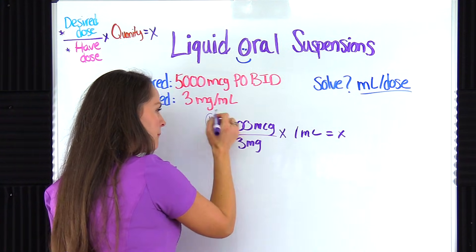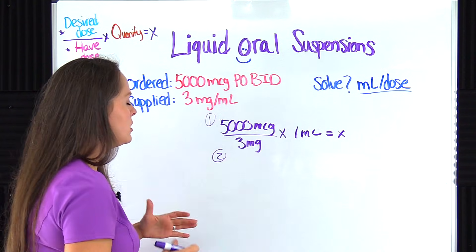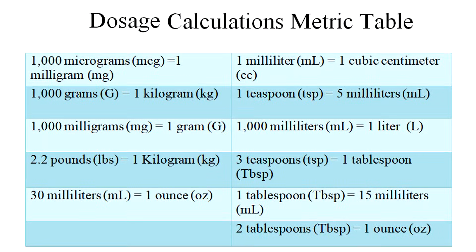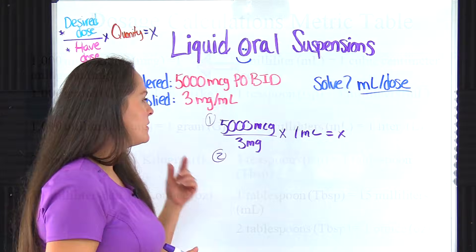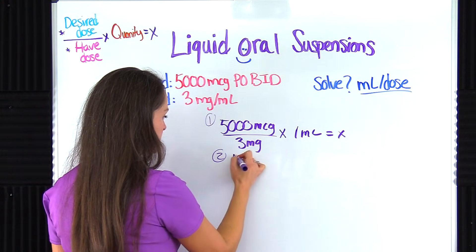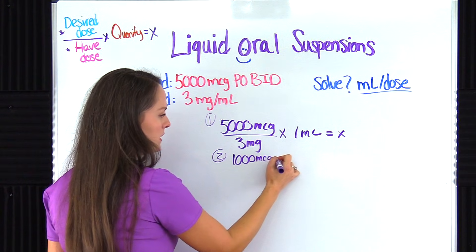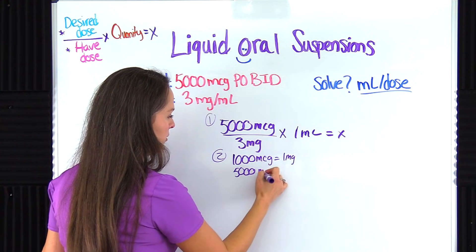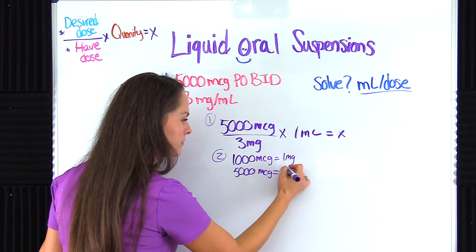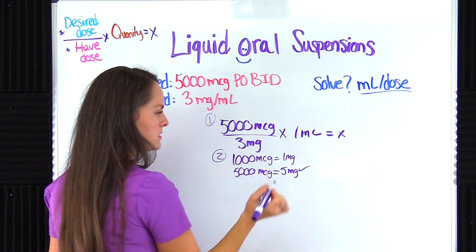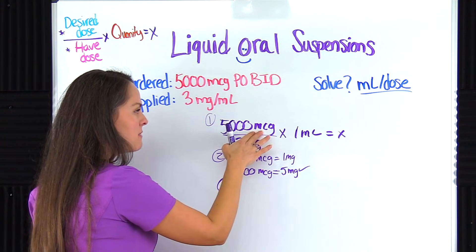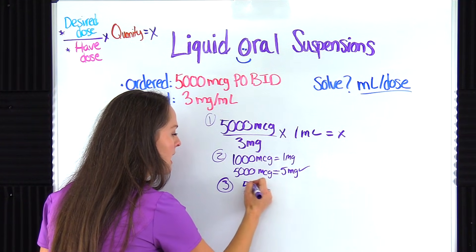Step two is getting these units to match. We're going to convert to milligrams because that's what we have on hand. From the metric table — which you want to memorize, and once you do these problems over and over you'll recall it fast — we know that 1,000 micrograms equals 1 milligram. So if we have 5,000 micrograms, that equals 5 milligrams. That's what we want. Now let's go to step three and resume plugging into our formula.